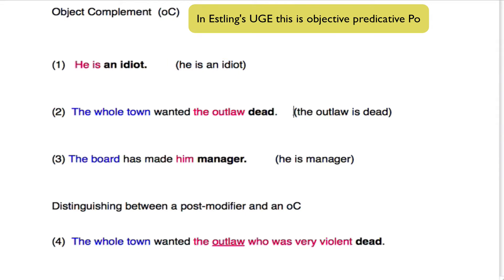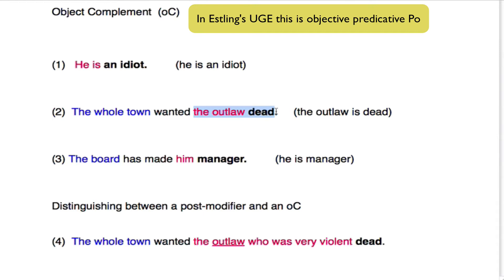The reason being that in all of these cases here, had this been in subject form, then it would have been like this. Now let's go on to number two: the whole town wanted the outlaw dead. The whole town is the subject, wanted is the predicator, and the outlaw is the object. Dead isn't another somebody or something — it's not another object. Instead, the whole town wanted the outlaw different to how it was. Instead of being alive, they wanted the outlaw dead. So dead is the object compliment. And had this been just the clause by itself, it would have been: the outlaw is dead. So you can see that the object compliment behaves similarly to the way the subject compliment would have done, had this only been the clause itself.